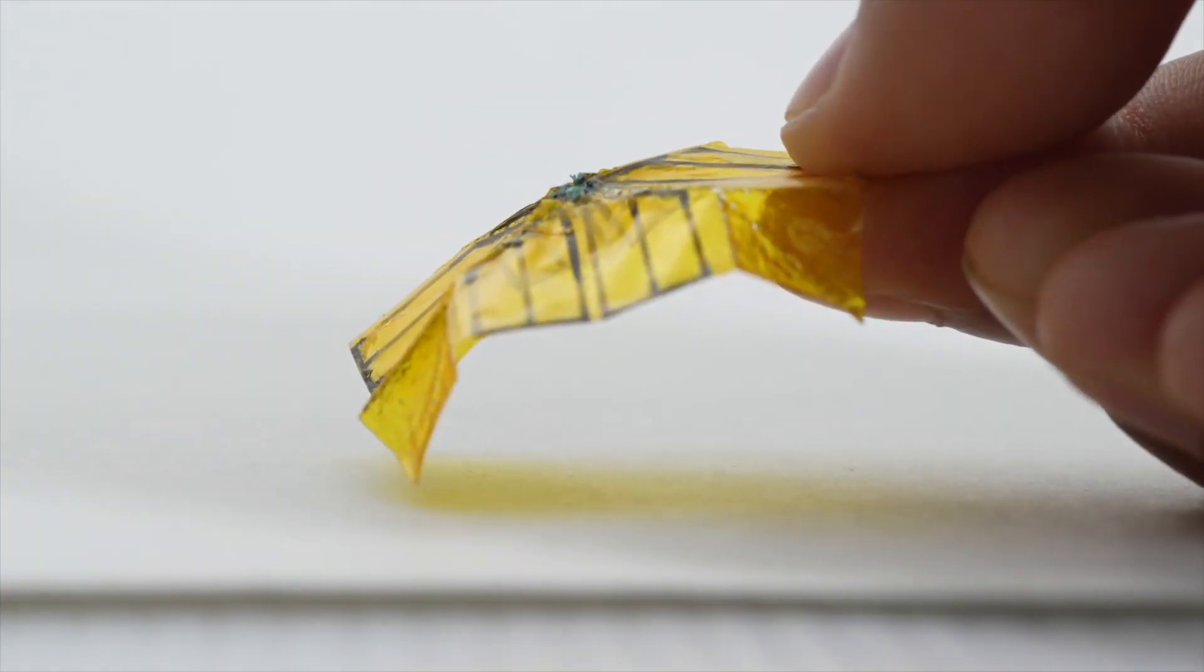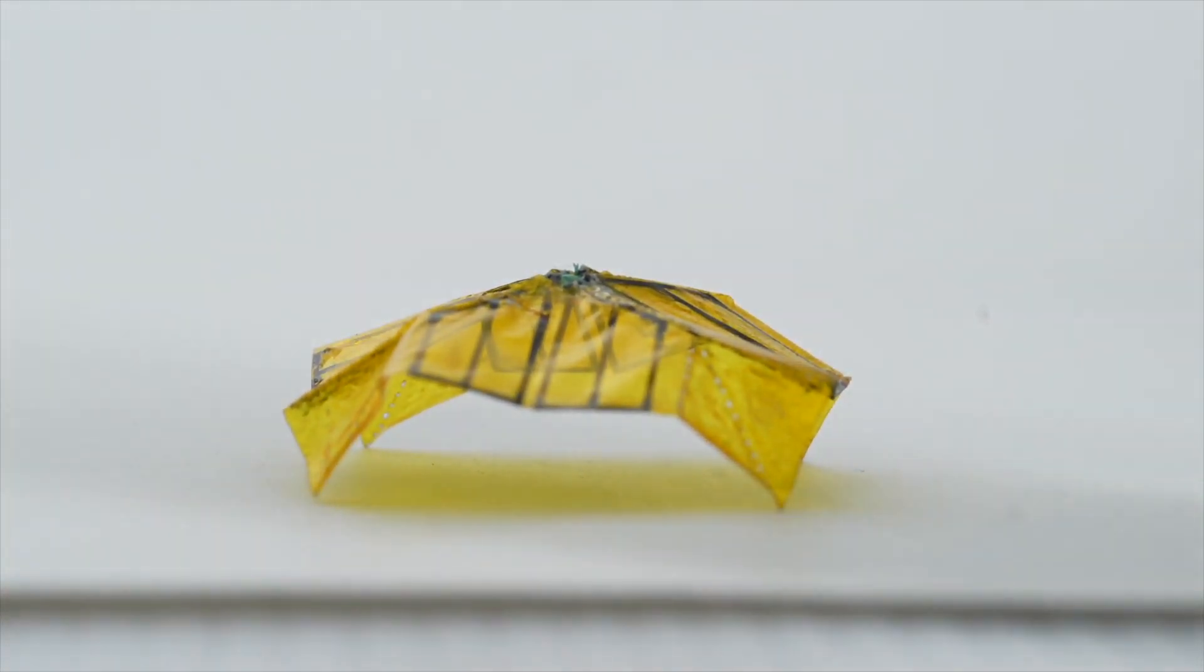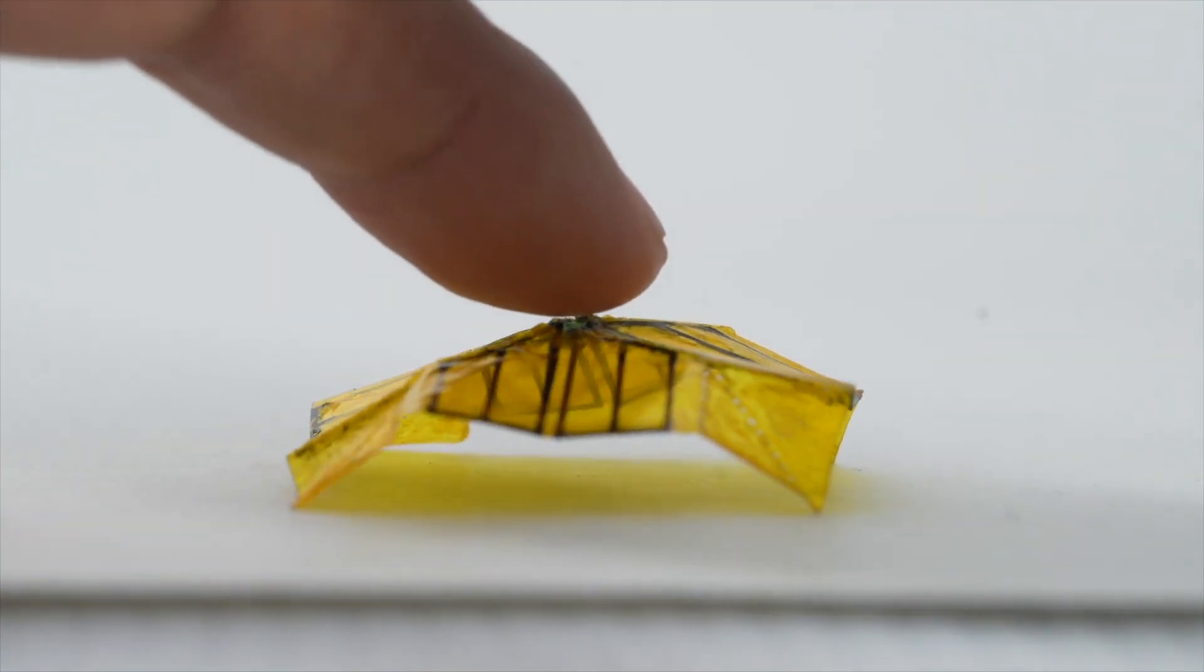For instance, leaf-out origami demonstrates bistability, meaning that it has two distinct folded shapes that requires energy to transition between.